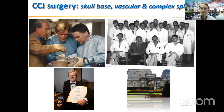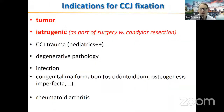Cranioservical junction surgery is a very interesting mixture of skull base surgery, vascular surgery, and complex spine surgery — you have to be proficient in all these domains. The main indications today are tumor cases and iatrogenic cases. If the condyle is resected as part of surgery, stabilization may be needed. Other indications include trauma, degenerative pathology, infections, and congenital malformations with supplementary bones like os odontoideum. Rheumatoid arthritis was previously a common indication, but this has become quite obsolete due to good medical treatments now available.